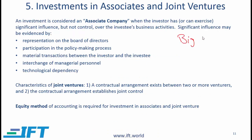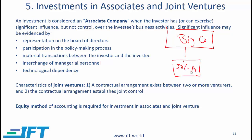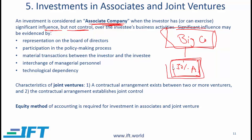If we have a big company and this big company buys a 30% stake in company A, then this is referred to as an investment in an associate company. To put it more formally, an investment is considered an associate company when the investor — in this case big company — has or can exercise significant influence but not control over the investee's business activities. Here the investee is company A.